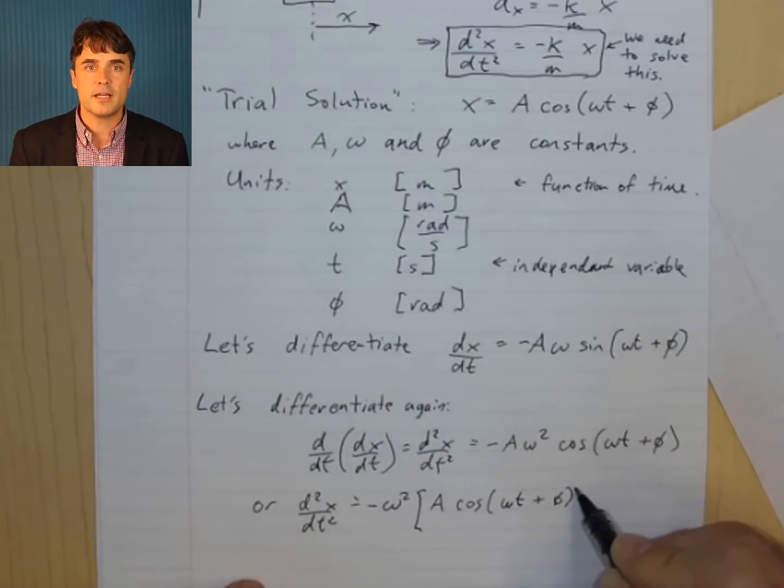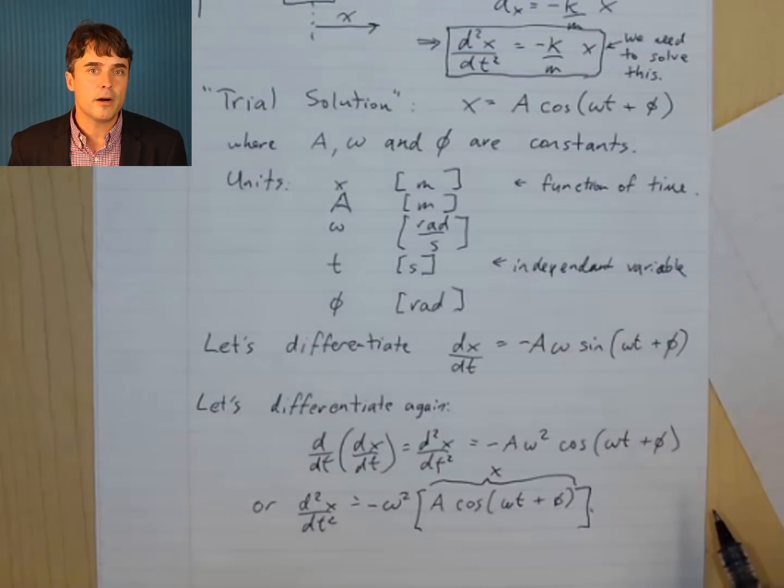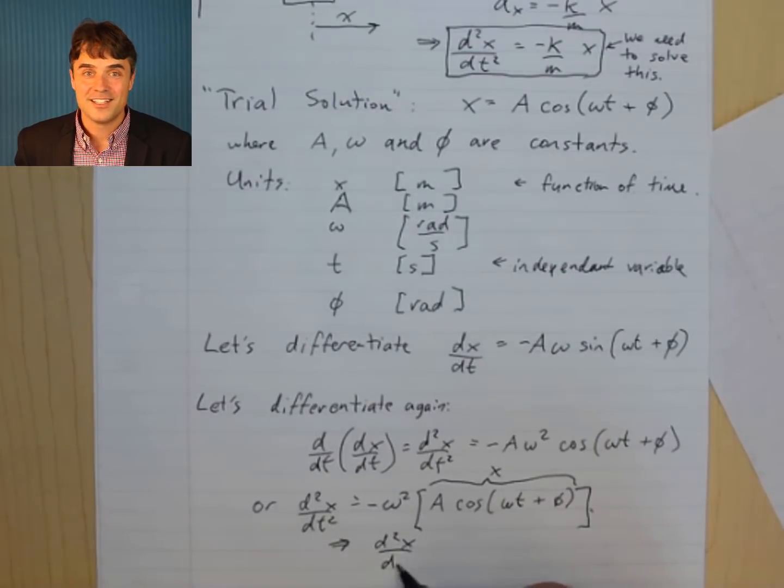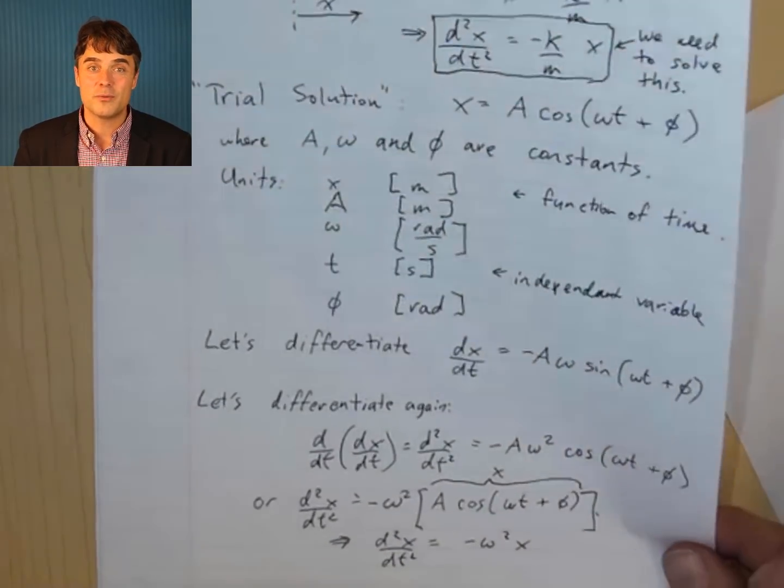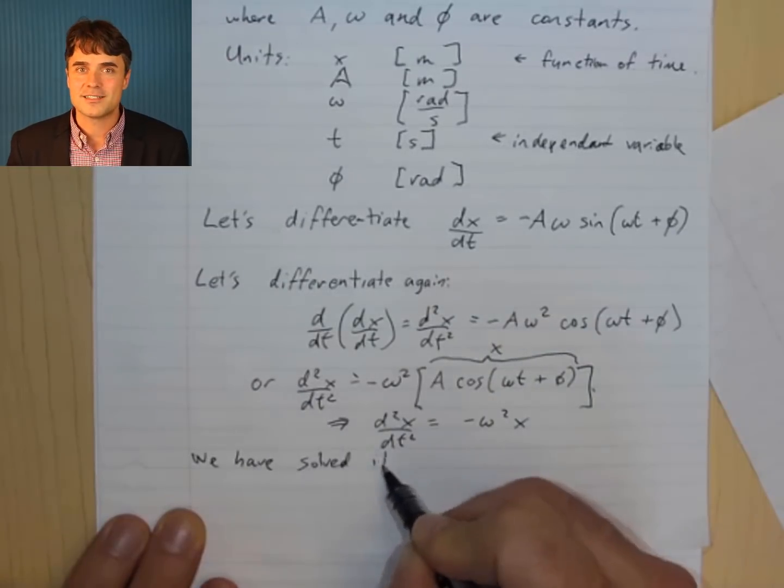You can rearrange this a bit, and note that this whole part here is equal to x. So, this can be written as d²x by dt² equals negative omega squared times x.